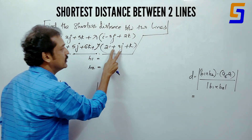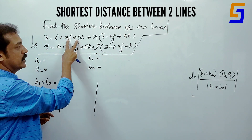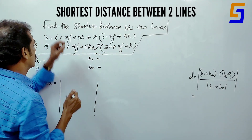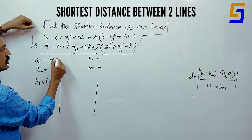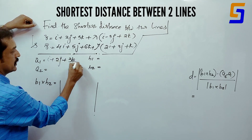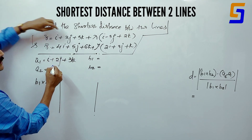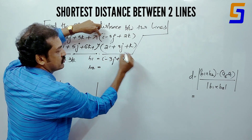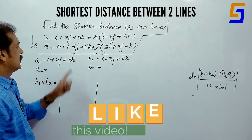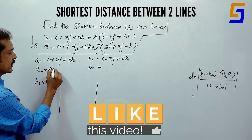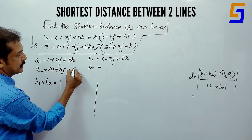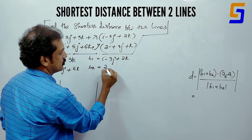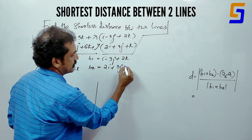A1 is i plus 2j plus 3k. B1 is i minus 3j plus 2k. A2 is 4i plus 5j plus 6k. B2 is 2i plus 3j plus k.